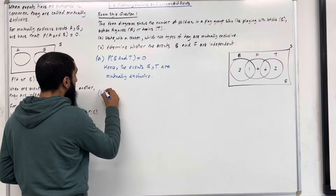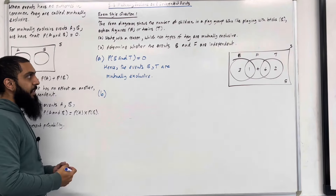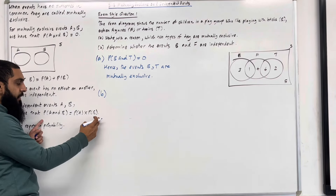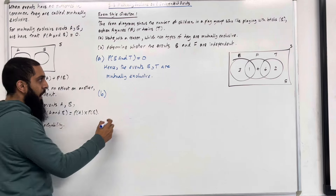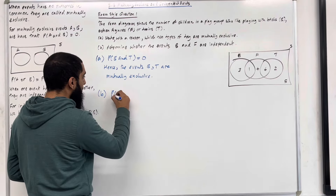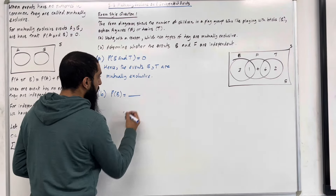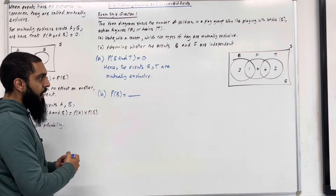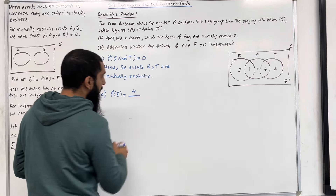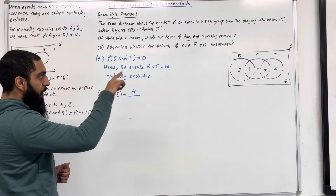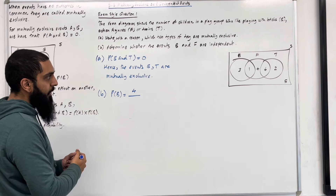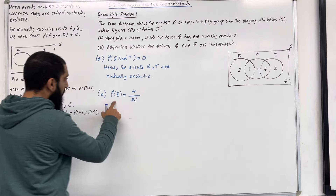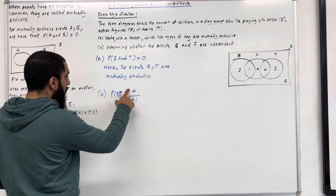Let's move on to part B: determine whether the events B and F are independent. We are going to use the test for independent events. Let's start off by calculating probability of B. Inside the circle of B, we have 3 and 1, so 3 plus 1 is 4. If we add up all the numbers, we have 3 plus 1 plus 4 plus 6 plus 2 plus 5, which is 21. So the probability of B is equal to 4 out of 21.